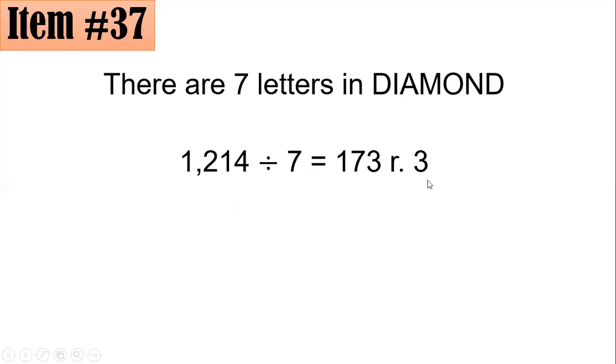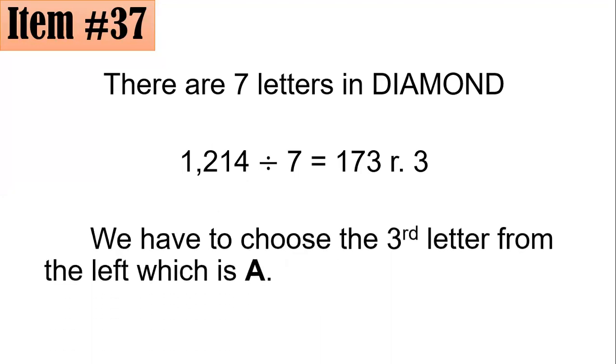Since they occur in repeated intervals, it's good that we divide them by seven and note the remainder afterwards. With the help of your calculators, you could check that 1214 divided by 7 is equal to 173 remainder 3. This remainder tells us that if you start from the left, A is the third letter from the left. So I'm sure that A will be the 1214th letter from the left, letter C.